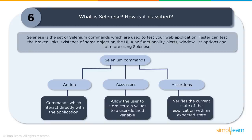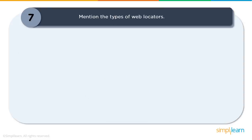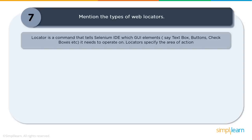The third category is assertions. Assertions are like accessors but verify the state of your application and confirm it matches what is expected — a comparison of actual versus expected results. There are two types: soft assertions and hard assertions. A soft assertion, like verify title, checks whether expected and actual outcomes match and continues with the test case. A hard assertion, like assert title, stops the test case from executing if the assertion fails.